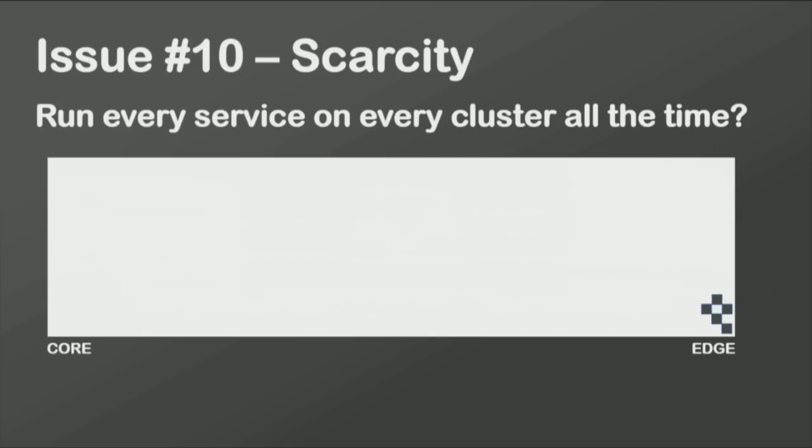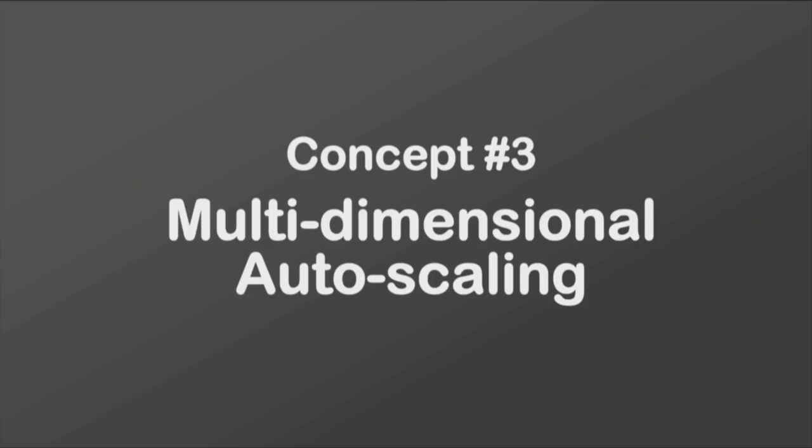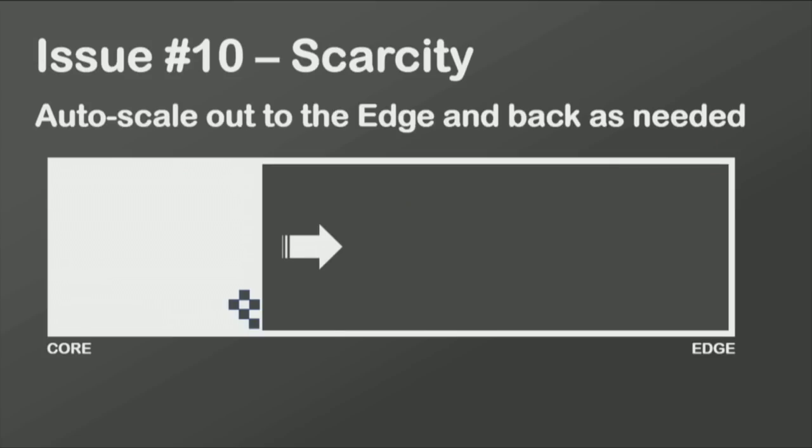Resources are scarce at the edge, so should you clone every microservice and run them everywhere? Or should we be more intelligent? This brings up the final concept: multidimensional autoscaling. We all know about scaling up and down — Kubernetes is really good at that. But what about scaling out and scaling back? If you're using that number of clusters, do you need every microservice in every location all the time? Or could you use metrics to decide: I'm seeing a ton of traffic coming from Seattle, so place front-end or authentication services out at the Seattle edge location. You now operate in two dimensions: scale up where you are, or scale out closer to the user.